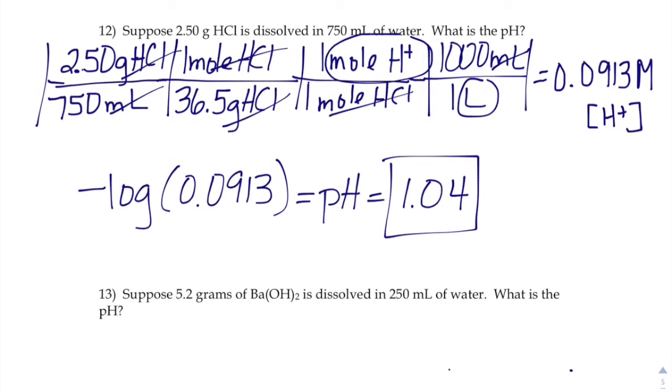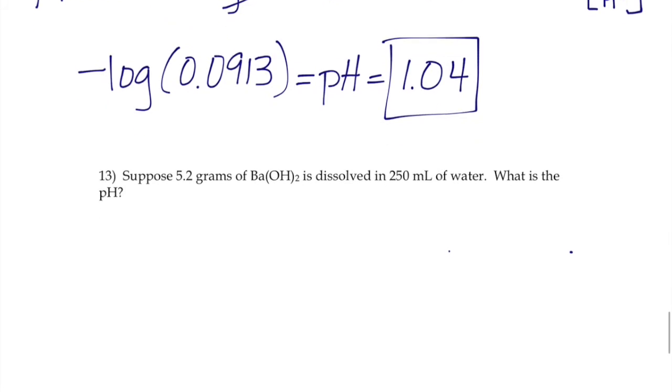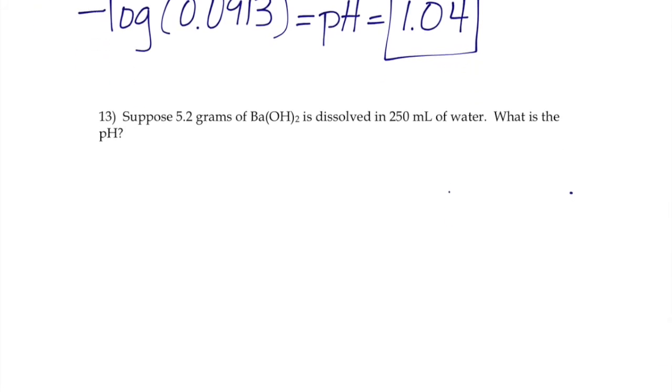What if we have a base instead? There's gonna be a little extra step in this next one because we know about OHs and we're gonna find stuff about Hs a little bit harder in this next one. It's gonna start off very similar though. We're gonna have 5.2 grams of barium hydroxide dissolved in 250 milliliters worth of water to make up our solution.